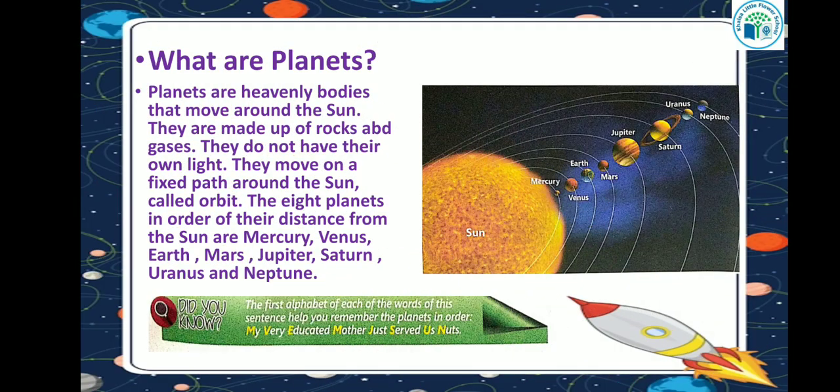What are planets? Planets are heavenly bodies that move around the sun. They are made up of rocks and gases. They do not have their own light. They move on a fixed path around the sun called an orbit.